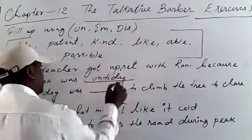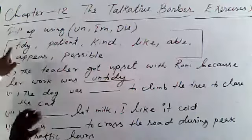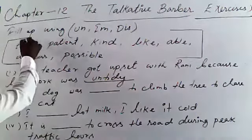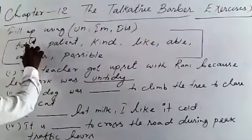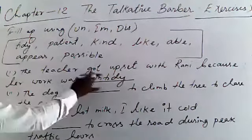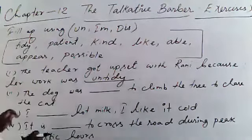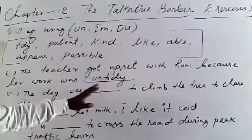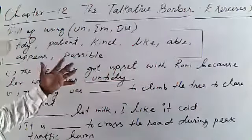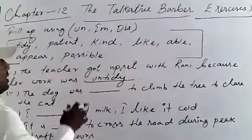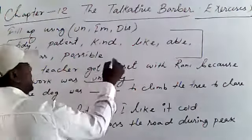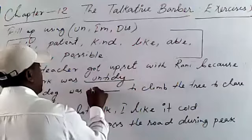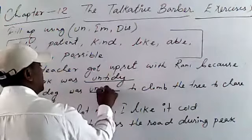Untidy — tidy becomes untidy. That is the first answer. For the second sentence: 'The dog was ___ to climb the tree' — able becomes unable.